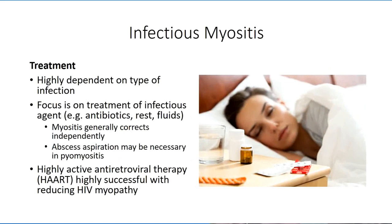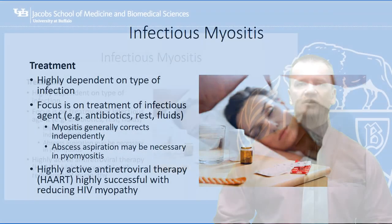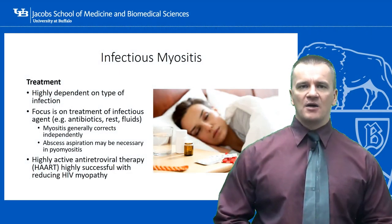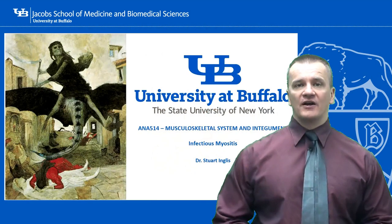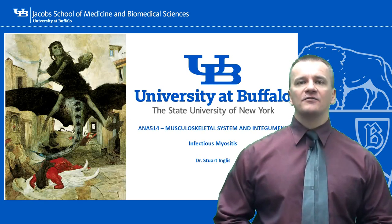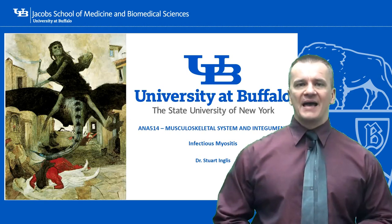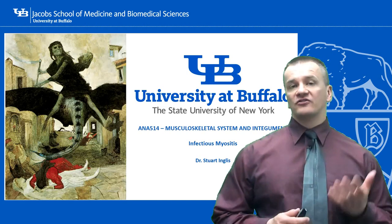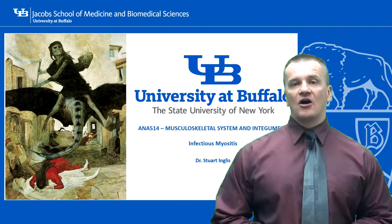Treatment for the disease is going to be heavily dependent on the specific cause. Antibiotics and antiparasitic medications may help to limit the infection and shorten recovery time. Most forms of infectious myositis will resolve spontaneously with sufficient time and rest. In the case of HIV-related myopathy, highly active antiretroviral therapy has demonstrated success in reducing the symptoms of HIV myopathy. That concludes this session on infectious myositis. In our final session on muscular diseases, we will look at classes of myopathies that result from adverse reactions to chemical compounds, such as venoms and medications — these are the toxic myopathies.